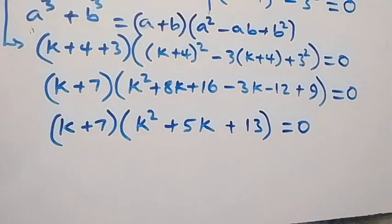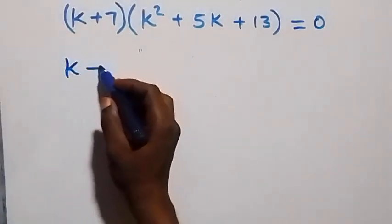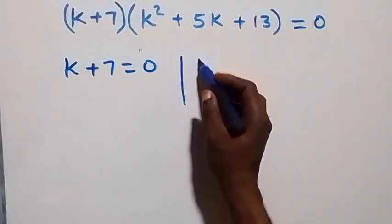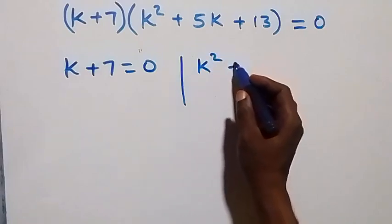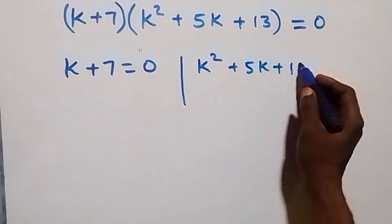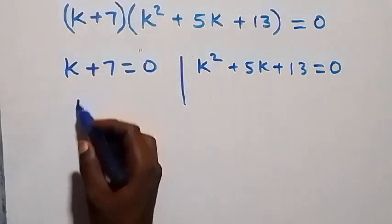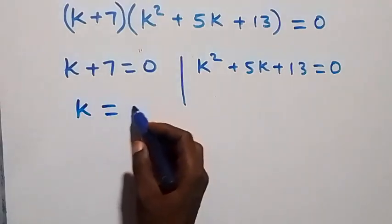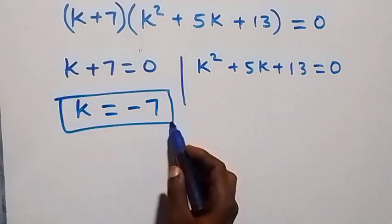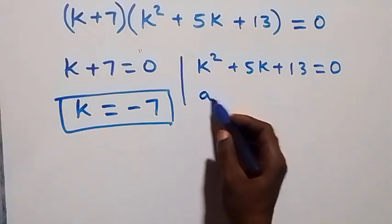This implies two possible cases: either k plus 7 equals to zero, or k squared plus 5k plus 13 equals to zero. From the first factor we get k equals to minus 7, which is a real solution.